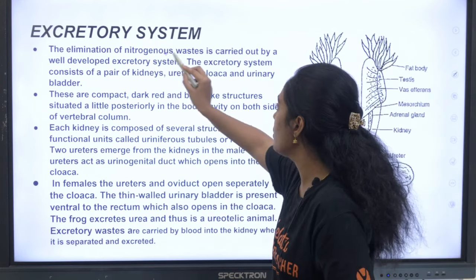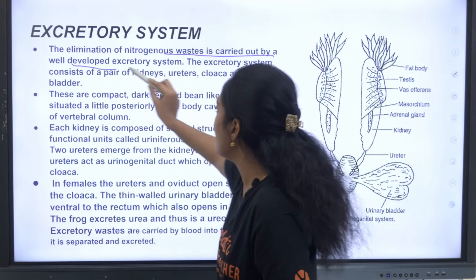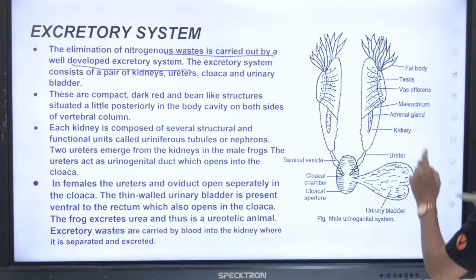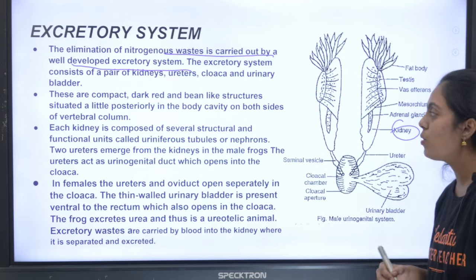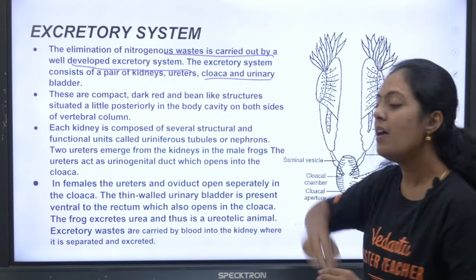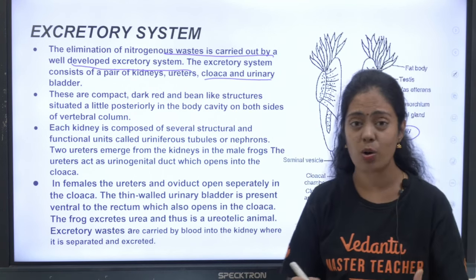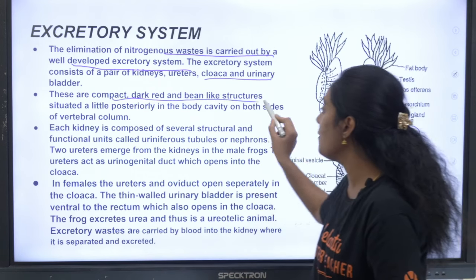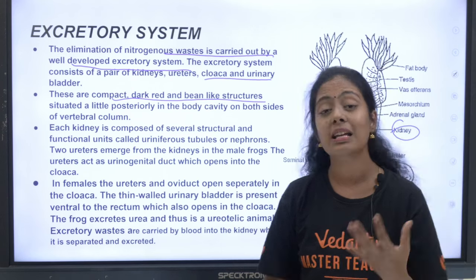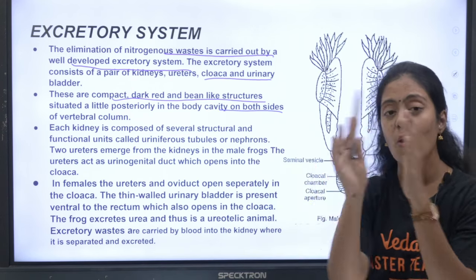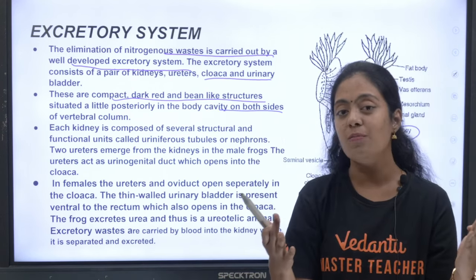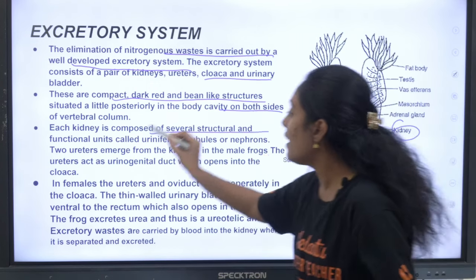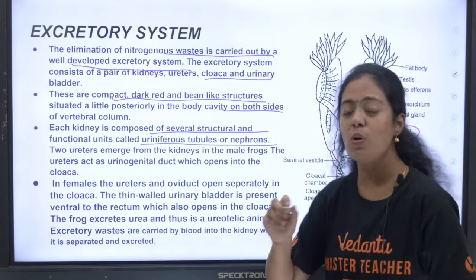The excretory system: elimination of nitrogenous waste is carried out by a well-developed excretory system consisting of a pair of kidneys, ureters, cloaca, and urinary bladder. The kidneys are compact, dark red, bean-like structures located posteriorly in the body cavity on both sides of the vertebral column.